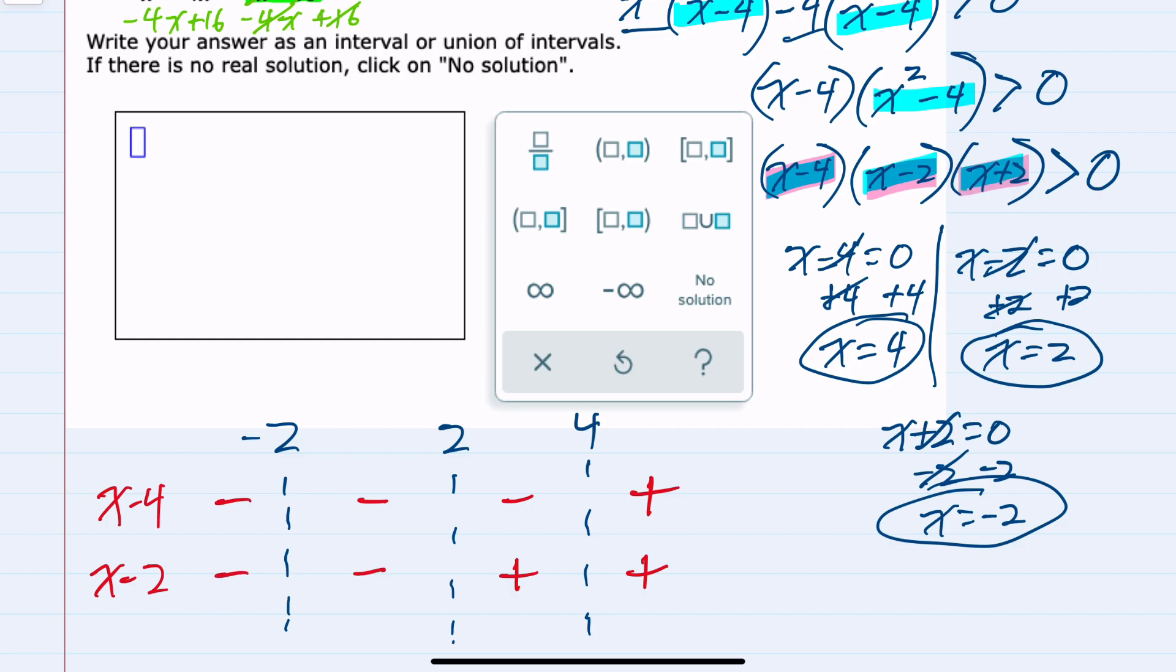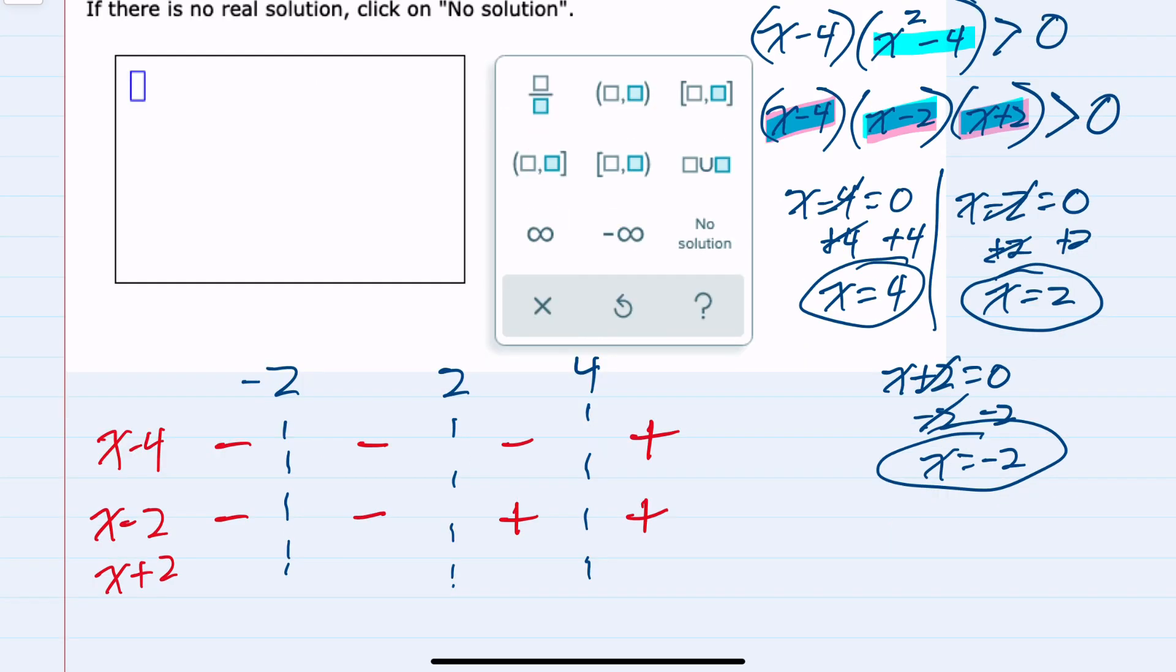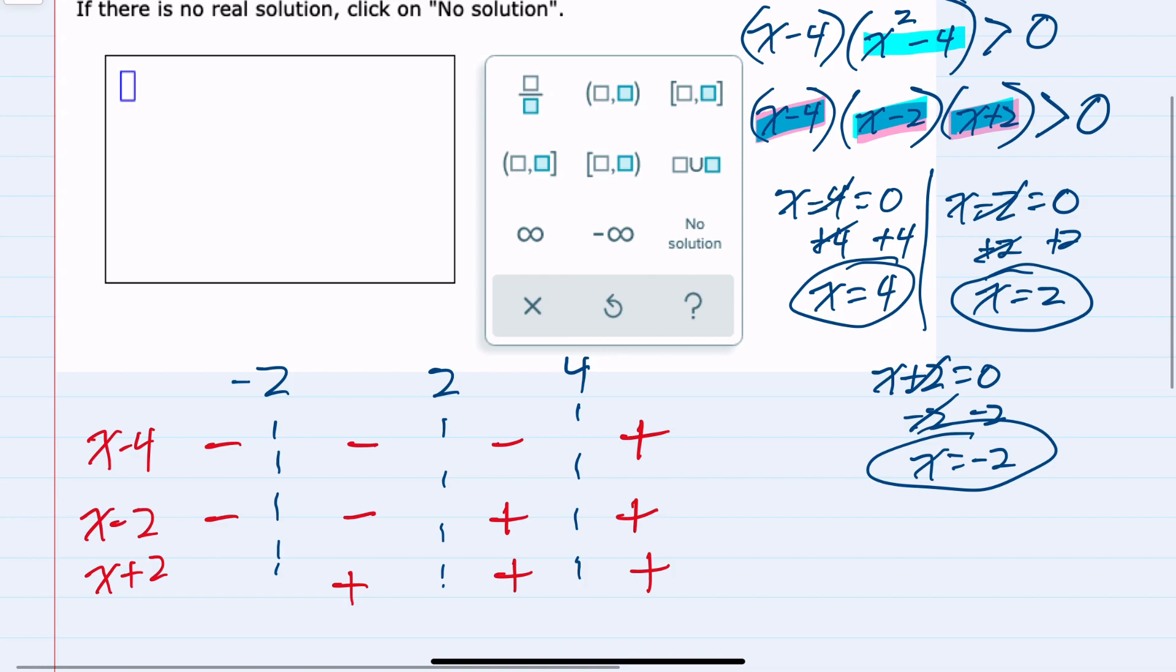And then our last factor, x plus 2. If I plug into x plus 2, any value greater than negative 2, I would have a positive. Any value less than negative 2, I would have a negative.